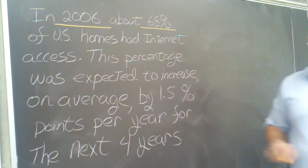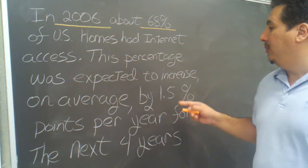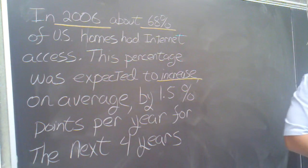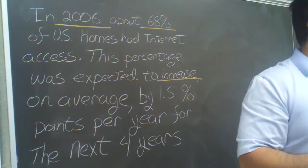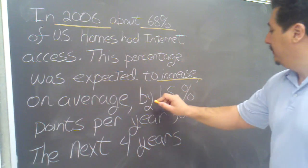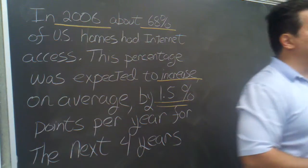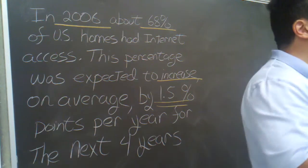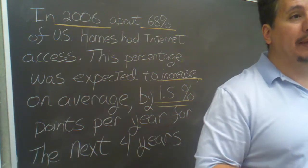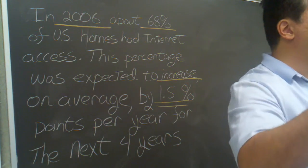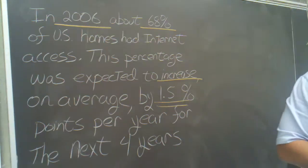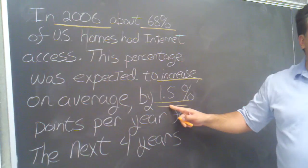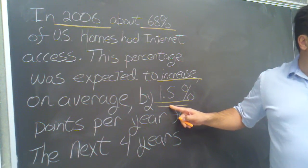I continue to read: the percentage was expected to increase, on average, by 1.5%. If something is increasing, I'm viewing that as some form of change. Change is described by slope. How is it increasing? By 1.5%. So when I choose an input variable and an output variable, my slope must be consistent with that, because the slope tells me how the output variable changes for every one input variable.